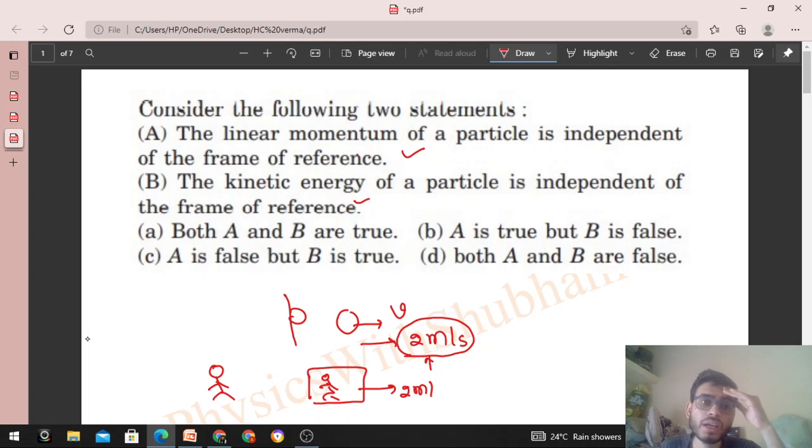Linear momentum is mass into velocity, right? Since velocity is frame-dependent, linear momentum is also frame-dependent. So option A is wrong. Kinetic energy is half of m into v squared. Speed is frame-dependent, so kinetic energy will also be frame-dependent. So option B is also incorrect.